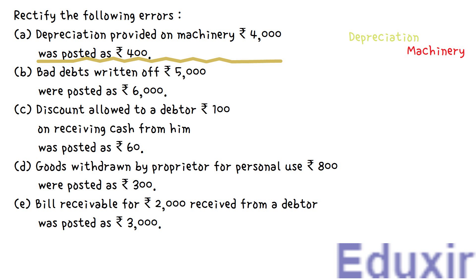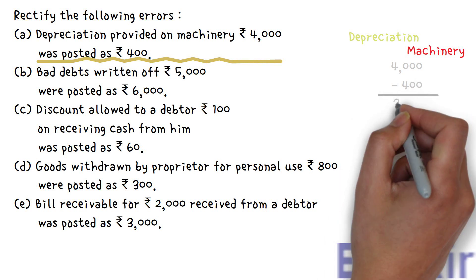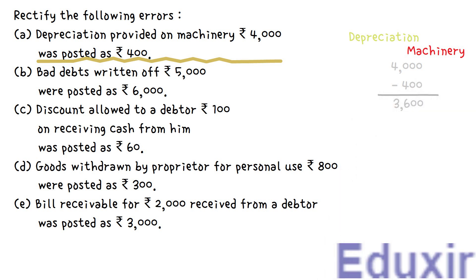However, instead of debiting the depreciation account with 4,000 rupees, it was debited with 400 rupees. Also, instead of crediting the machinery account with 4,000 rupees, it was credited with 400 rupees. From 4,000 rupees, if we subtract 400 rupees, we get 3,600 rupees. This is the amount not debited to the depreciation account — there is 3,600 rupees of short debit. So we should debit the depreciation account with 3,600 rupees. This amount was also not credited to the machinery account — there is 3,600 rupees of short credit. So we should credit the machinery account with 3,600 rupees.